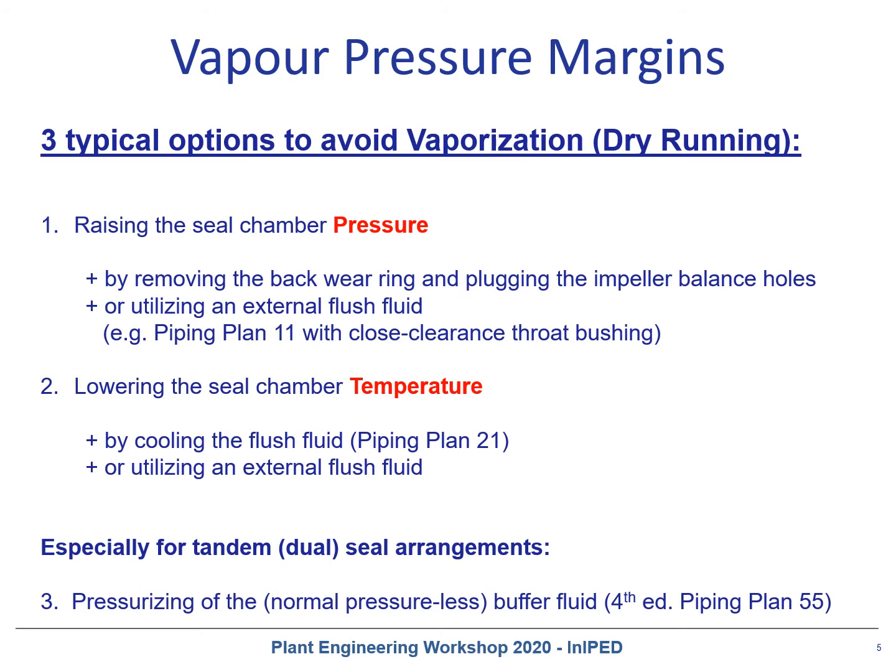Especially for dual seal arrangements, by pressurizing the normally pressure-less buffer fluid — for example, piping plan 55 as defined in API 682 Fifth Edition.